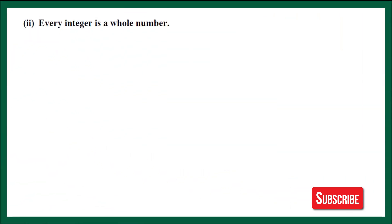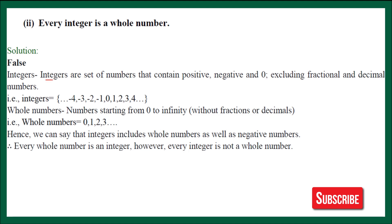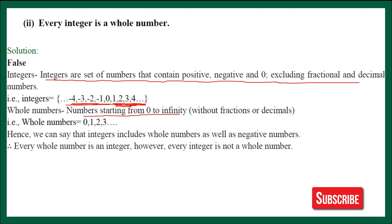Part 2: Every integer is a whole number. Let's check this statement too. Integers are a set of numbers that contain positive, negative, and zero, excluding fraction and decimal numbers. Looking at the collection of integers, it includes all positive numbers, negative numbers, and zero, but fractions and decimals are not included. Now we check: are all integers whole numbers? Whole numbers are numbers starting from zero to infinity. Not all integers are in this family — negative numbers are not present in the family of whole numbers. So every integer is not a whole number. The given statement is false.